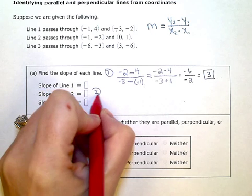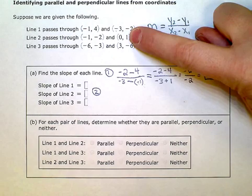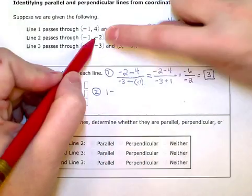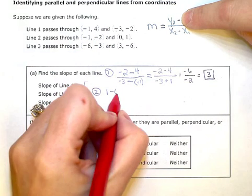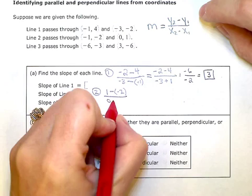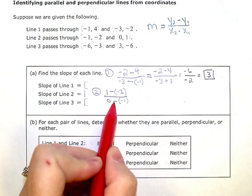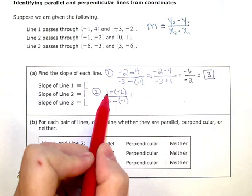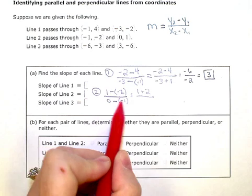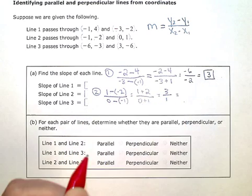Now I'm just going to repeat that process with my second line. Using the slope formula, Y from my second coordinate is 1, minus Y from my first coordinate is negative 2. And again, I have to do the minus and the negative here. X from my second coordinate is 0, minus X from my first coordinate is negative 1. So I have this minus and negative thing twice. This is the same as 1 plus 2, and this is the same as 0 plus 1. 1 plus 2 is 3. 0 plus 1 is 1. And 3 divided by 1 is 3.